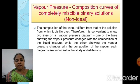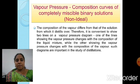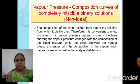The composition of the vapor differs from that of the solution from which it distills over. Therefore, it is convenient to show two lines on a vapor pressure diagram — one showing the vapor pressure changes with the composition of the liquid mixture, and the other showing the vapor pressure changes with the composition of the vapor. Such diagrams are important in the study of distillations.